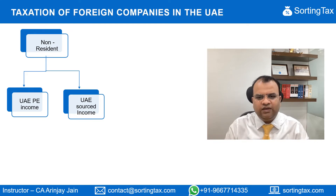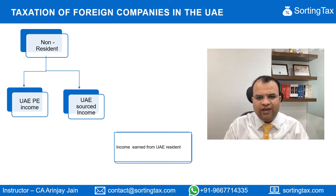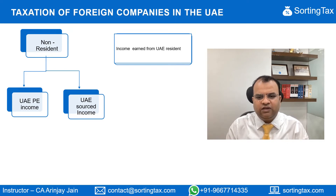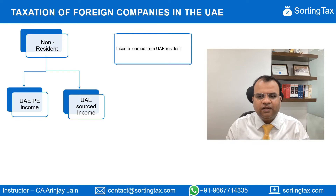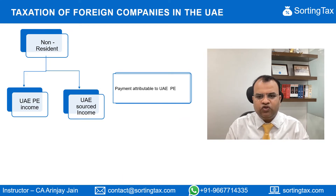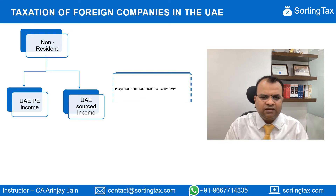The second category is UAE sourced income. If you have any of the following, you are liable to tax in the UAE. The first type is if you have a transaction with a UAE resident person and you earn income out of it — that is UAE sourced income which is taxable. The second type is if you have a permanent establishment and there is a payment which you receive that is attributable to your UAE PE — that is also considered UAE sourced income and is taxable.